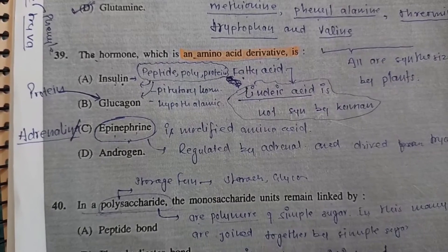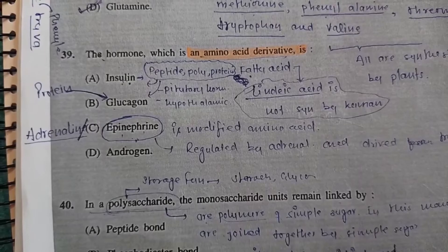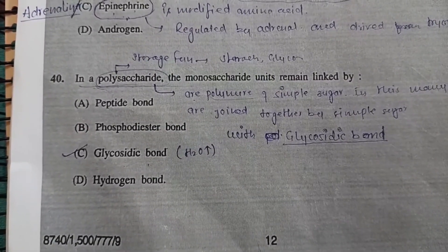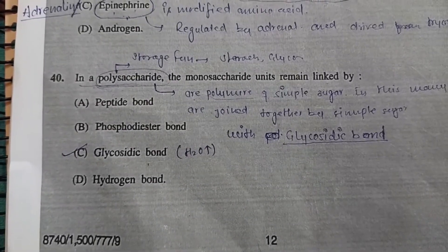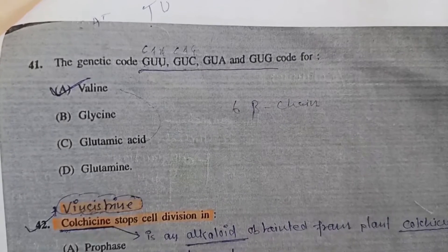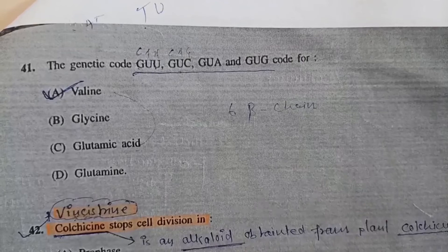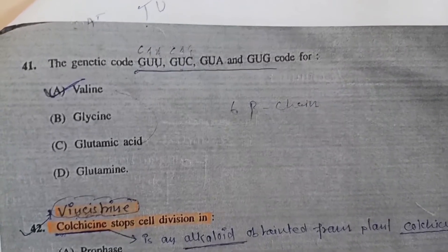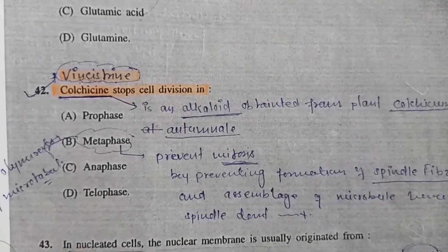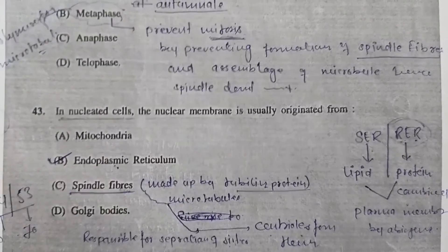Question 39: The hormone which is an amino acid derivative is - Option C, epinephrine. Question 40: In a polysaccharide, the monosaccharide units remain linked by - C, glycosidic bond. Question 41: The genetic codes GUU, GUC, GUA, and GUG code for valine.